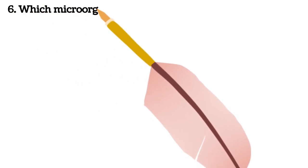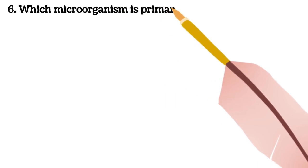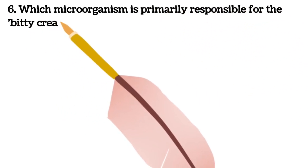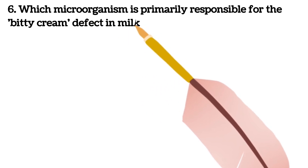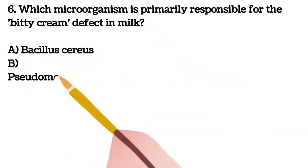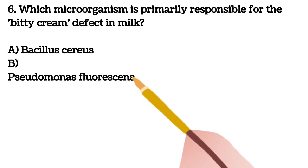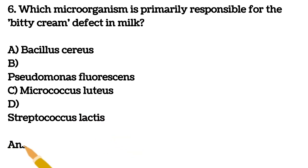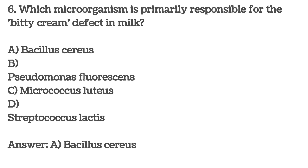Next question. Sixth question. Which microorganism is primarily responsible for the bitty cream defect in milk? A. Bacillus cereus B. Pseudomonas fluorescens C. Micrococcus luteus D. Streptococcus lactis. Your answer is A, Bacillus cereus. If you like this channel, please share and subscribe. Don't forget to click the bell button to get notifications.